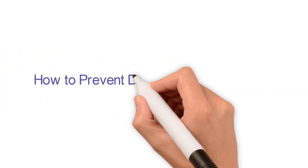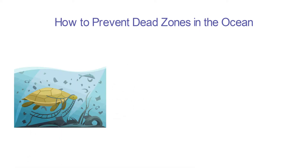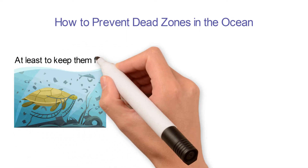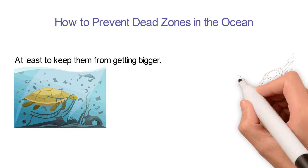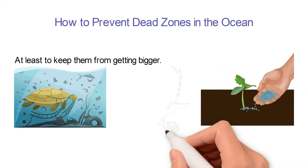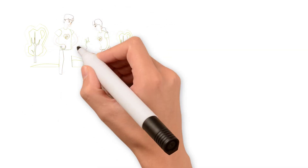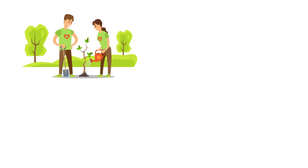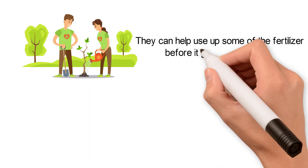How to prevent dead zones in the ocean. There are things that we can do to stop dead zones in the ocean, or at least to keep them from getting any bigger. One example is using less fertilizer in meat farming. If farmers use less fertilizer, this can lessen the amount of harmful runoff. Also, planting cover crops helps to keep nutrients in the soil. Otherwise, water easily washes into the lakes and rivers. Finally, if we plant some trees and shrubs near bodies of water, they can help use some of the fertilizer before it gets into the water.